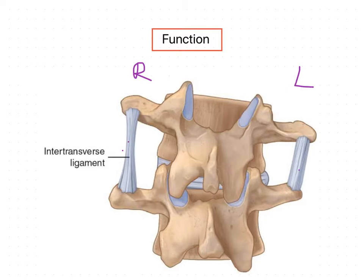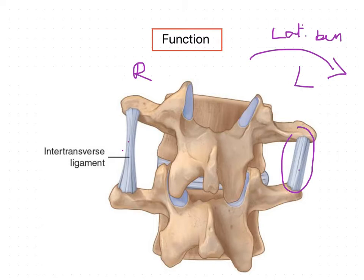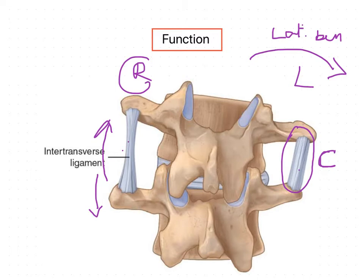The function can be observed during lateral bending, which occurs on both the left side and the right side. If lateral bending occurs on the left side, the left side inter-transverse ligament is going to compress, while on the right side the fibers are going to stretch. So during lateral bending, on the same side of the lateral bending the fibers compress, and on the contralateral side the fibers stretch.